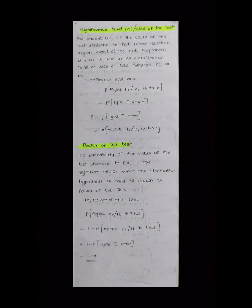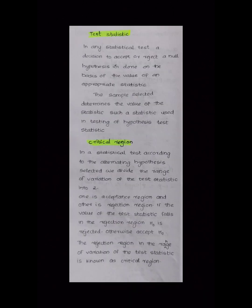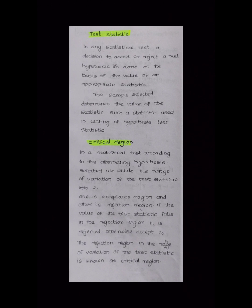This is the alternative hypothesis. This is the number of test statistics. This is the critical region. This is the problem.